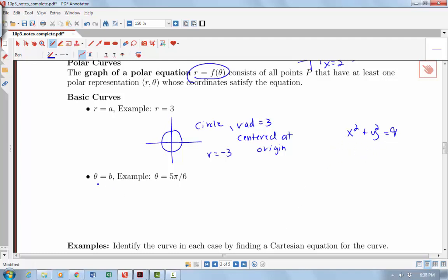If we're talking about some other basic curve, theta equals some angle b, like theta equals 5 pi over 6, what is that? I would make an angle of 5 pi over 6, which would be somewhere over here. I'm going to be making some angle 5 pi over 6, and then r could be anything. I could go any distance away from the origin, positive or negative distance, that would be along that line. So that's how we're getting a line here. This is going to be always a line through the origin that's making that particular angle.